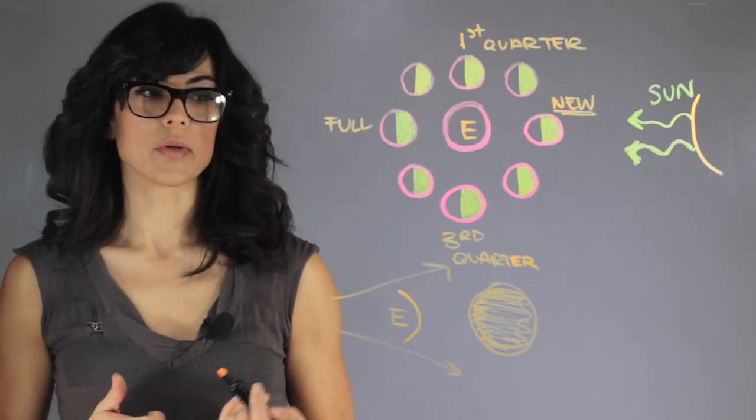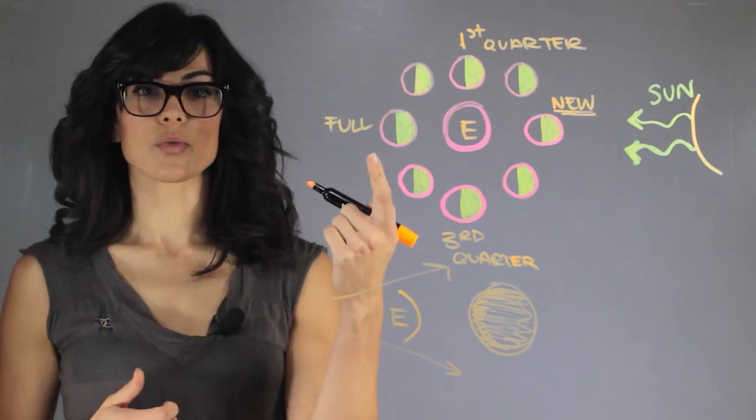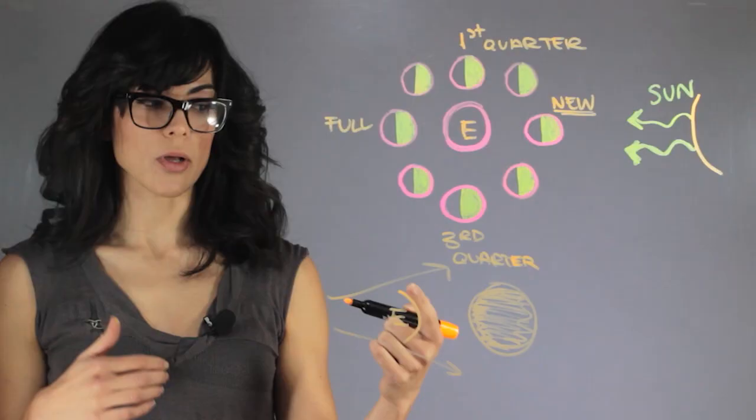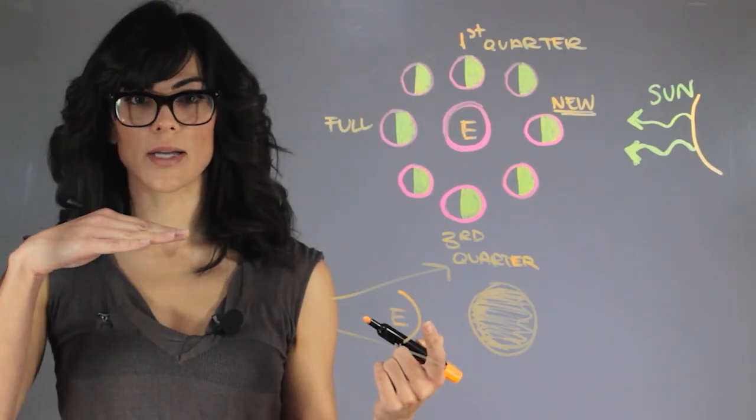And that's the difference between a full moon and eclipse. A full moon is when we don't block out the sunlight, and a lunar eclipse is when we block out the sunlight because we're directly in the middle.